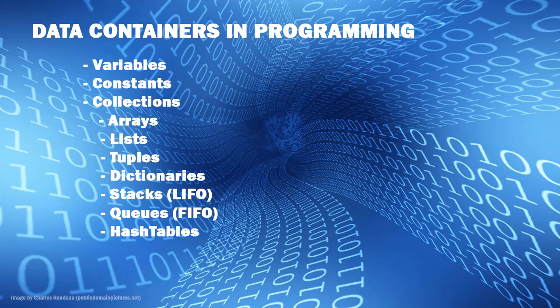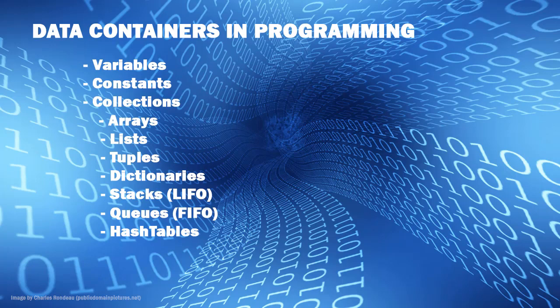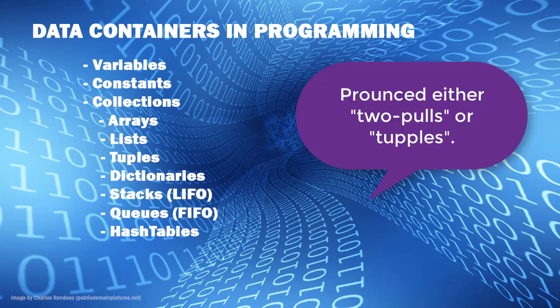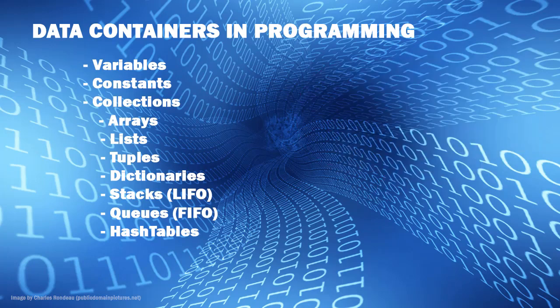Then we have collections that contain larger amounts of data. A variable only contains one piece of information, as does a constant. But collections can contain multiple pieces of information — multiple amounts of data. The most common of which is arrays, which is where we usually start students. But then we have more generic containers such as lists, and tuples, which can contain multiple values of different or the same data type and are treated like a variable.